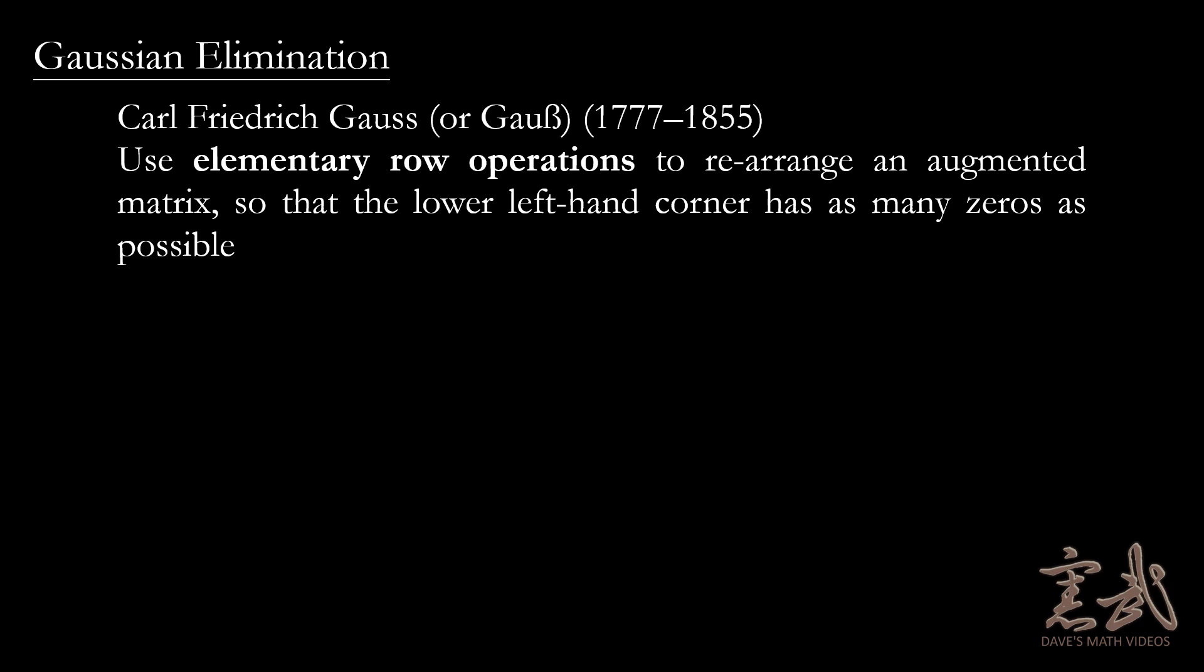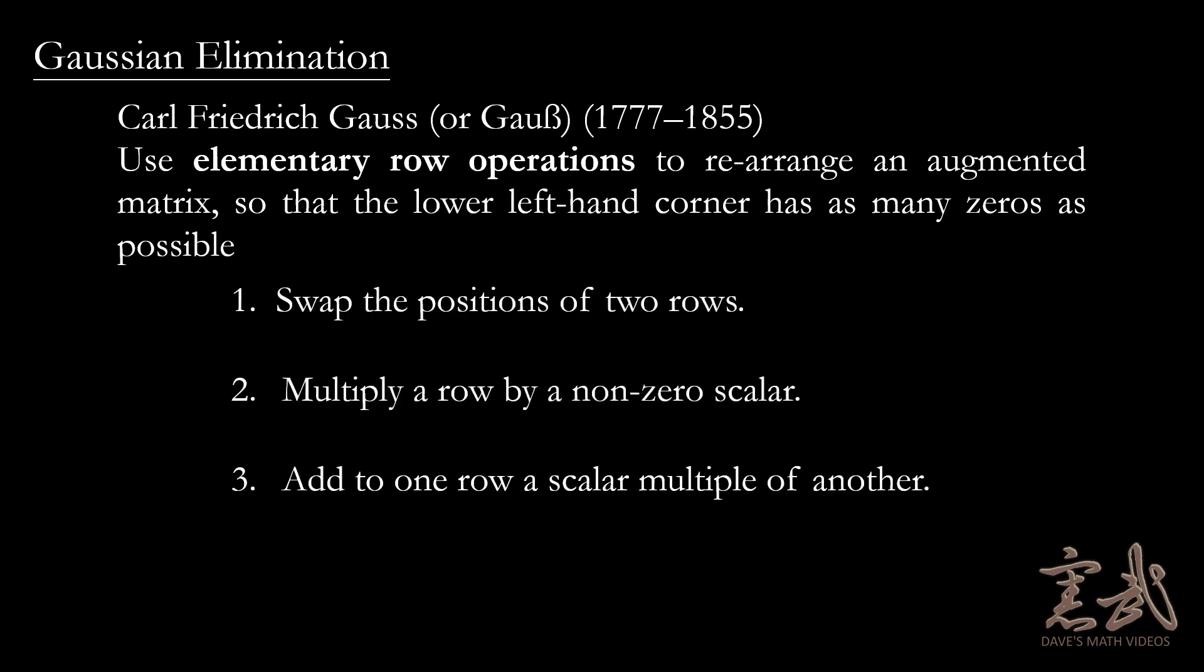In Gaussian elimination, we use elementary row operations to rearrange an augmented matrix so that the lower left-hand corner has as many zeros as possible. To do this, we are basically allowed to do three things. We can swap the positions of any two rows, we can multiply any single row by a non-zero scalar, and we can add one row to a scalar multiple of another.